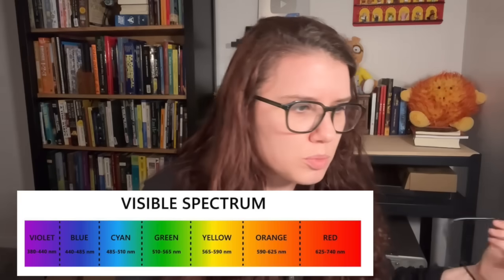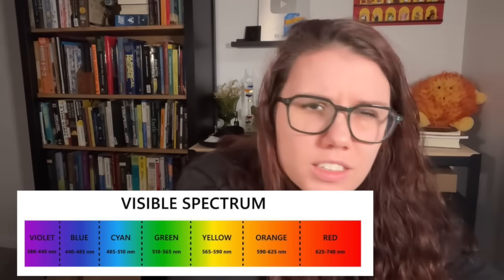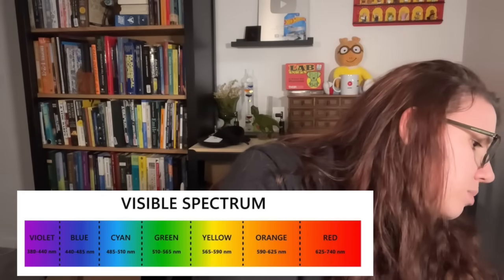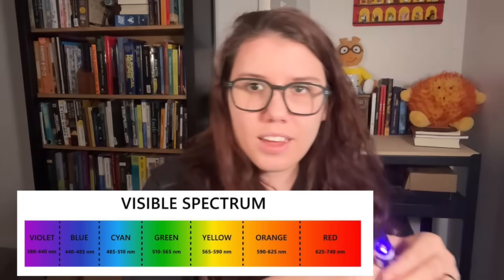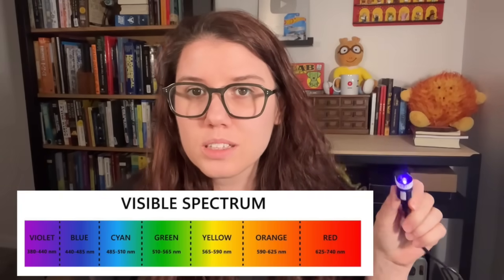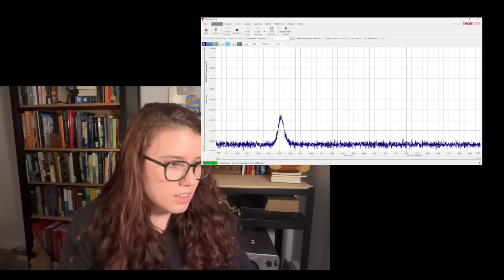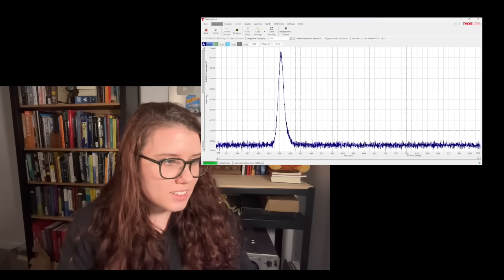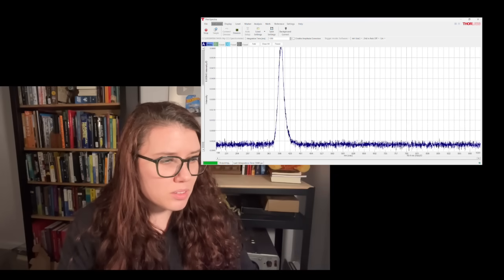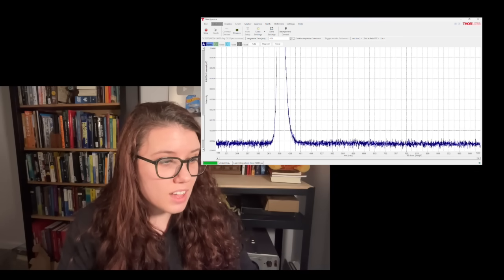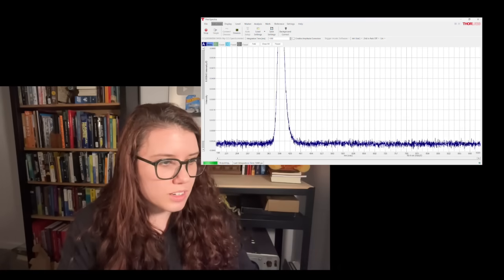This is a bluish-purplish one. We know what wavelength of light is bluish-purplish — it's like 400 to 500 nanometers. So if we plug this in... okay it looks bluish-purplish, really purple on camera. Let's take our spectrometer and try to measure the wavelength of light coming out of this. You can see this is about 397 nanometers, maybe 400 nanometers.